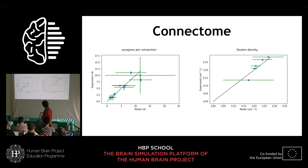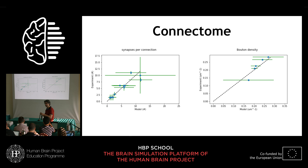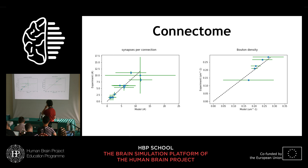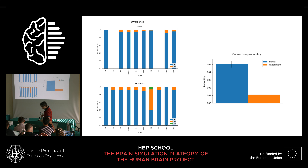We build the connectome and validate it. This is the number of synapses per connection: when cell A connects to cell B, they can contact each other with one or more synapses. This is the bouton density — how many synapses per unit length of axon. Here you see the model on the x-axis and the experiment on the y-axis; ideally all points lie on the diagonal. It's a good result, though not a perfect match, because it depends on many other parameters. We can also perform higher-level validations.